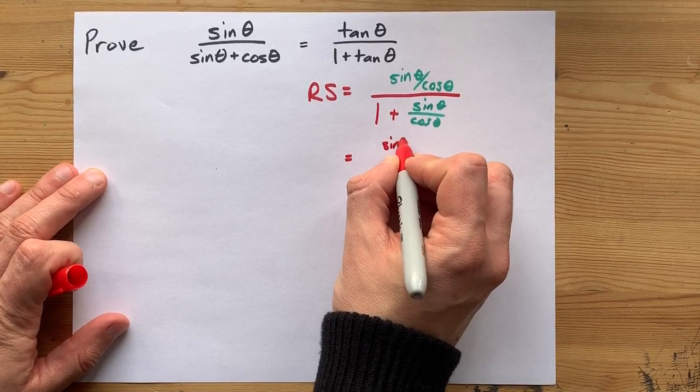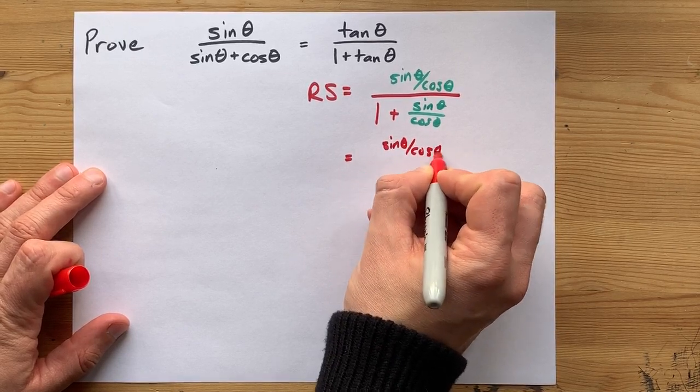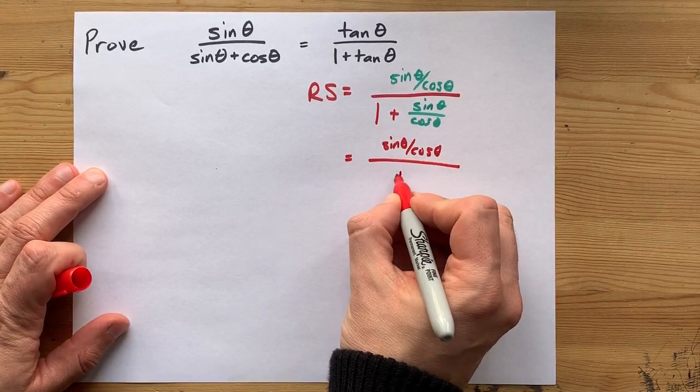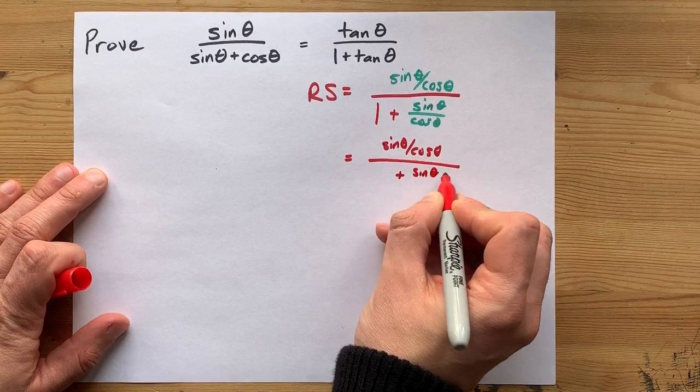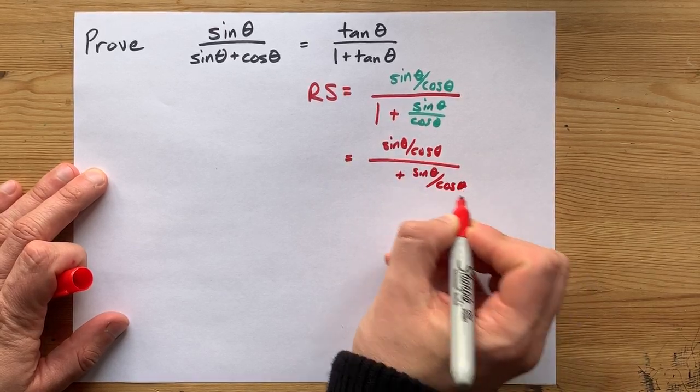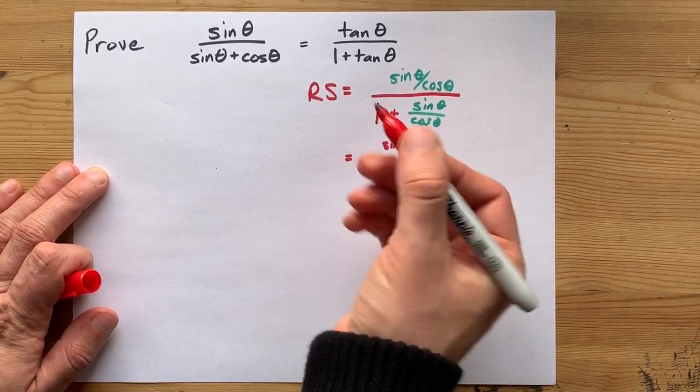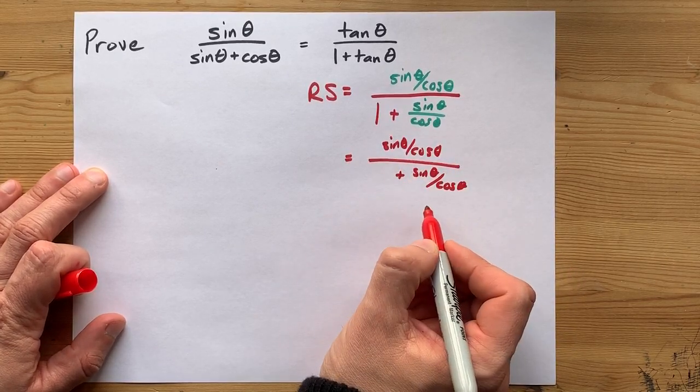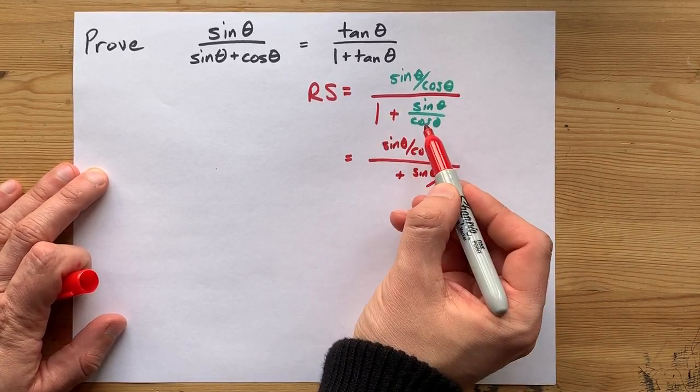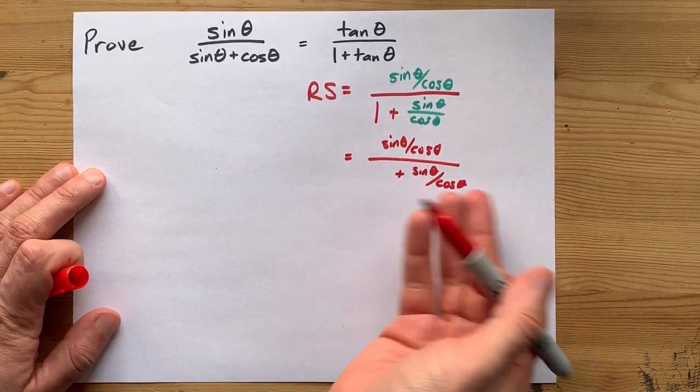So my top is still sine over cos. Check. Now, I'm going to have to add to sine theta over cos theta, but I need to replace this 1 with something over cos theta. I'm choosing cos theta for the bottom because that's the common denominator I want.